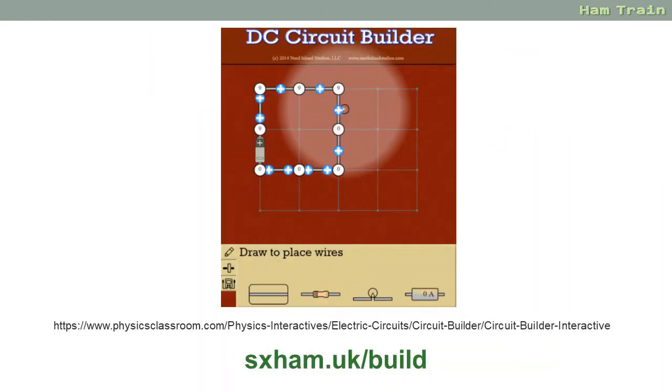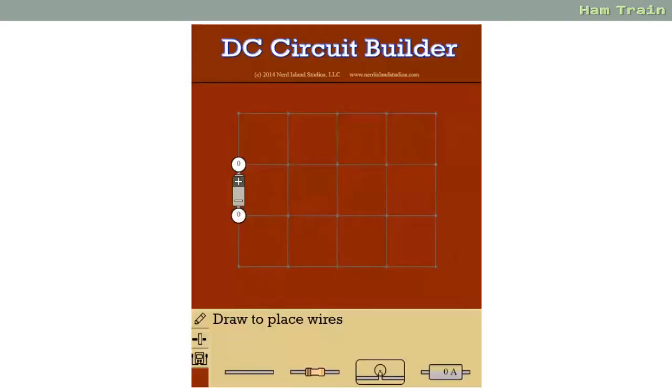What I'm going to introduce you to now is a very handy tool called the DC Circuit Builder. On the screen you'll see a very long web address. We've kept it simple and if you just type in sxham.uk forward slash build you'll find what we're looking at. Now this is a really brilliant little tool because you can basically build your own circuits to test the theory. When you start the tool it's pre-populated with a battery symbol on the left and you can basically pick in some wires to start building the circuit.